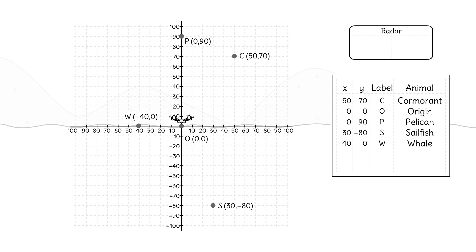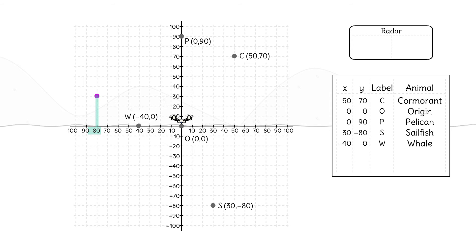Kamal doesn't need a radar to see that there's a giant albatross right here. Can you read the coordinates from the graph? Here's the x-value, directly below the albatross: negative 80. Here's the y-value, directly across: 30.